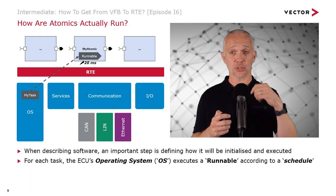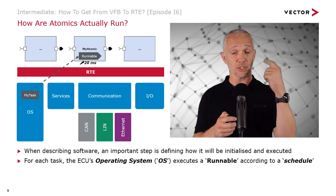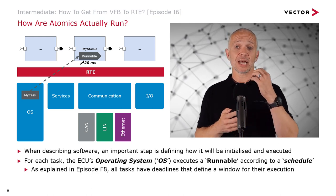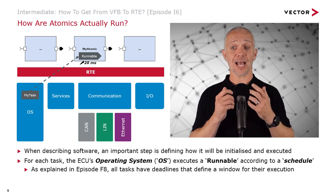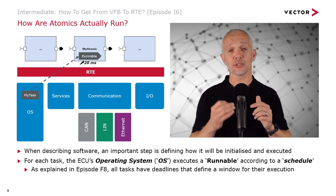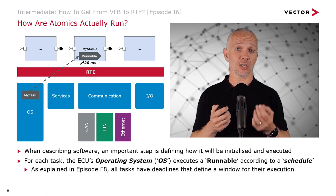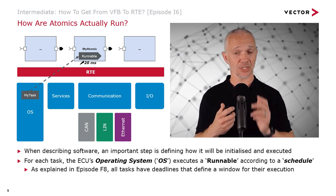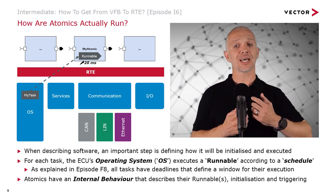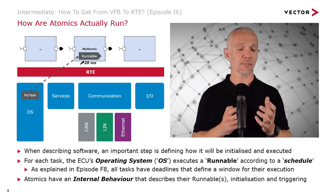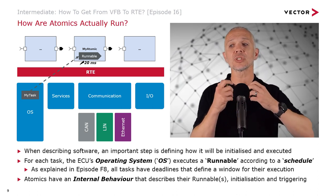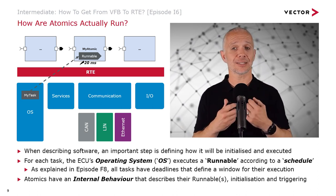I'll create a schedule, and every 20 milliseconds in that schedule I expect the runnable for my atomic to get run. As explained in episode F8, all tasks have deadlines — the final window for their execution — when we want to have hard real-time behavior, as we want in the AUTOSAR Classic platform. Atomics have an internal behavior, and the internal behavior is used to describe their runnables, their initialization, and their triggering.